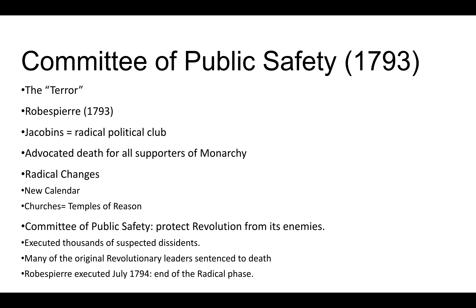Over time, even many of the original revolutionary leaders are deemed not radical enough and are also sentenced to death. This eventually ends when people in the National Convention realize how out of hand things are getting. They decide that the most radical people are the most dangerous to society, and so Robespierre himself is actually executed during the Terror in 1794, about a year after it begins. His death ends this most radical phase — the Terror. For about a year and a half people were fearful for their lives, and thousands were killed throughout France.